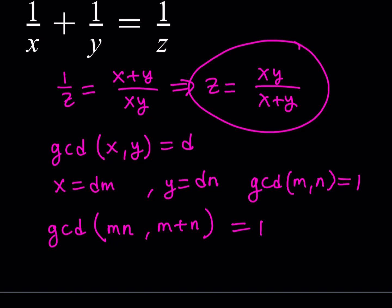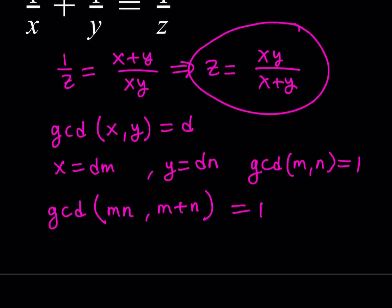But if g divides m plus n, and g divides m, then it needs to divide n as well, but g is different from 1. So, you get kind of like a contradiction. You can prove it. It's not too hard. So, this is our conclusion here that this needs to be 1.